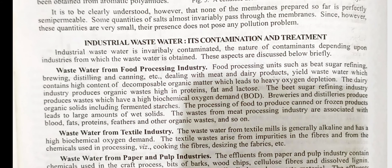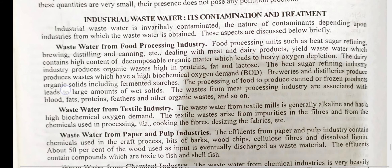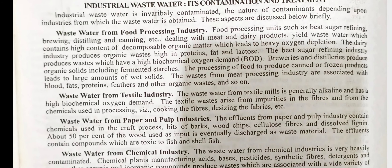Industrial waste water: its contamination and treatment. Industrial waste water is invariably contaminated, the nature of contamination depending upon the industries from which the waste water is obtained. Waste water from food processing industries such as beet sugar refining, brewing, distilling and canning, dealing with meat and dairy products, yields waste water with high content of decomposable organic matter leading to heavy oxygen depletion. The dairy industry produces organic waste high in protein, fat and lactose. The beet sugar refinery industry produces waste with high biological oxygen demand. Breweries and distilleries produce organic solids including fermented starch. Processing food to produce canned or frozen products leads to large amounts of wet solids. Waste from meat processing industries is associated with blood, fats, protein, feathers and other organic waste.